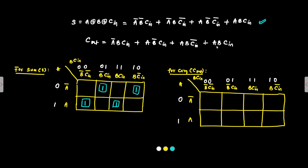So we have A-bar·B·C-in — this cell is occupied. A·B-bar·C-in — this cell is occupied. A·B·C-in-bar — this cell is occupied. And A·B·C — this cell is occupied. Here we can form pair formations — two-member groups. We can do the first pair, then another pair.